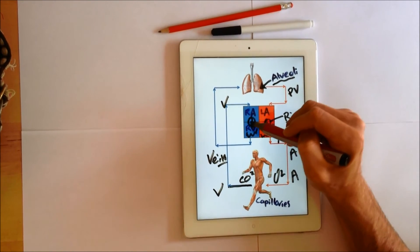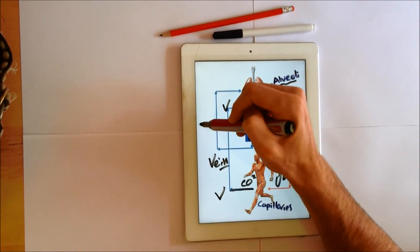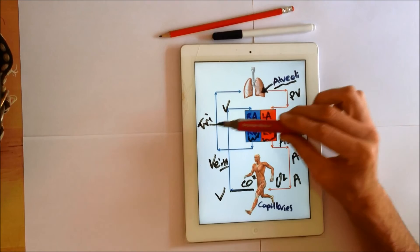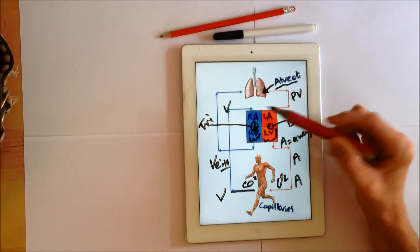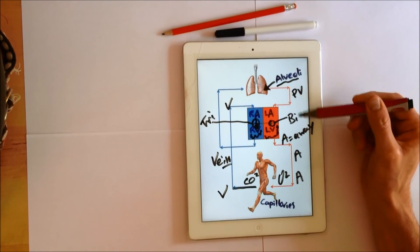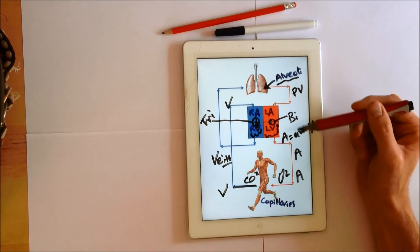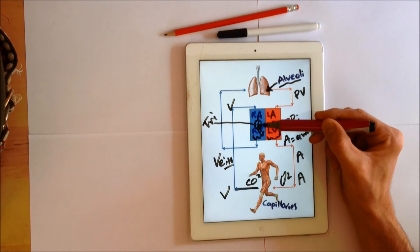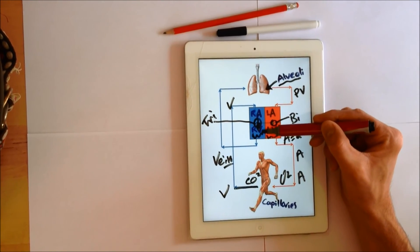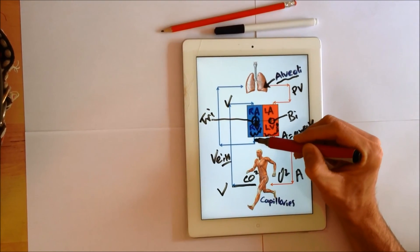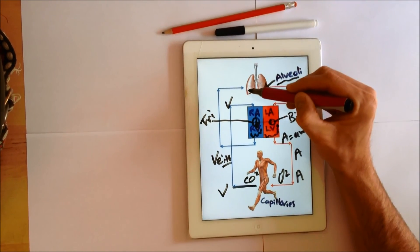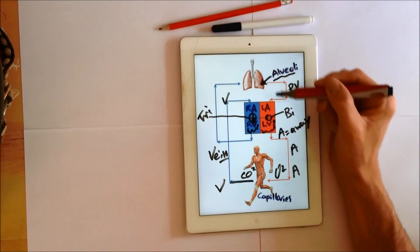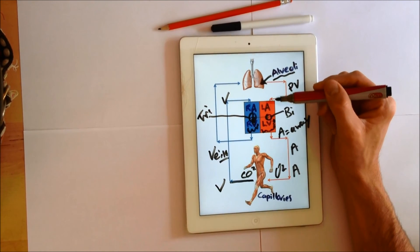The valve here is your tricuspid valve. I always remember it: tri has an R in it and it's on the right hand side, whereas bicuspid doesn't have the R, therefore it must be on the left. So right atria, tricuspid valve, right ventricle, pump blood back to the lungs, into the capillaries, alveoli, and then back up through the trachea and out through the nose and mouth.